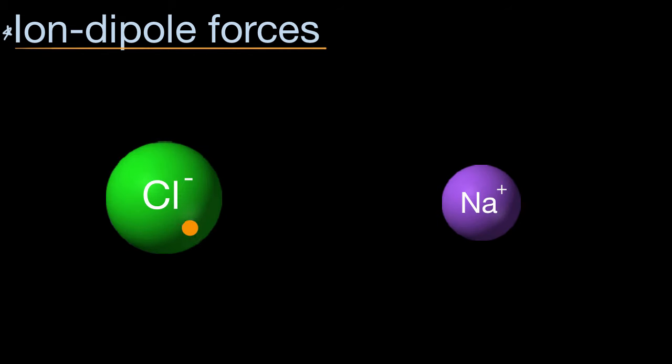Ions are atoms or molecules that have a net charge. For example, when chlorine gains an electron and becomes the chloride ion, it's an ion because it now has a net negative charge. Similarly, when sodium loses an electron, it now has a net positive charge. So this is the sodium ion.